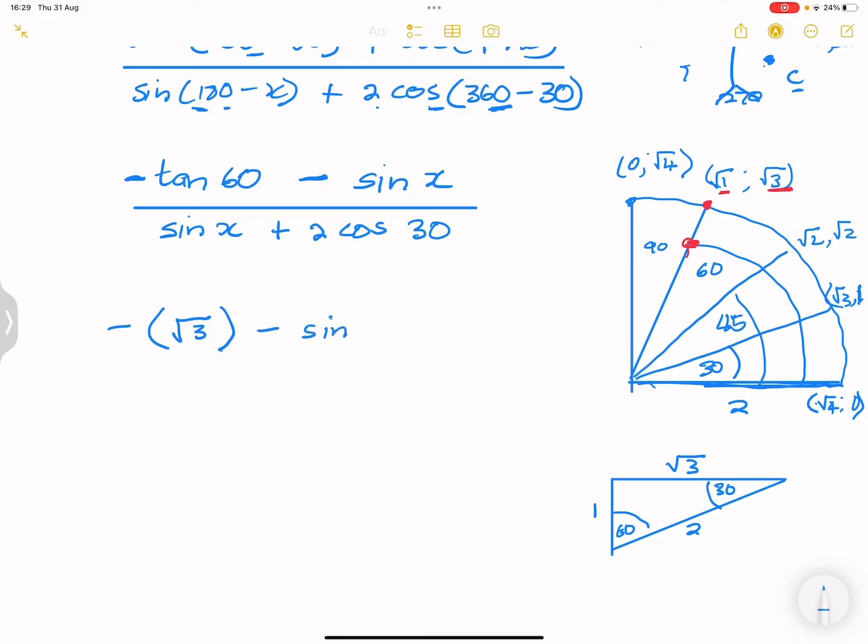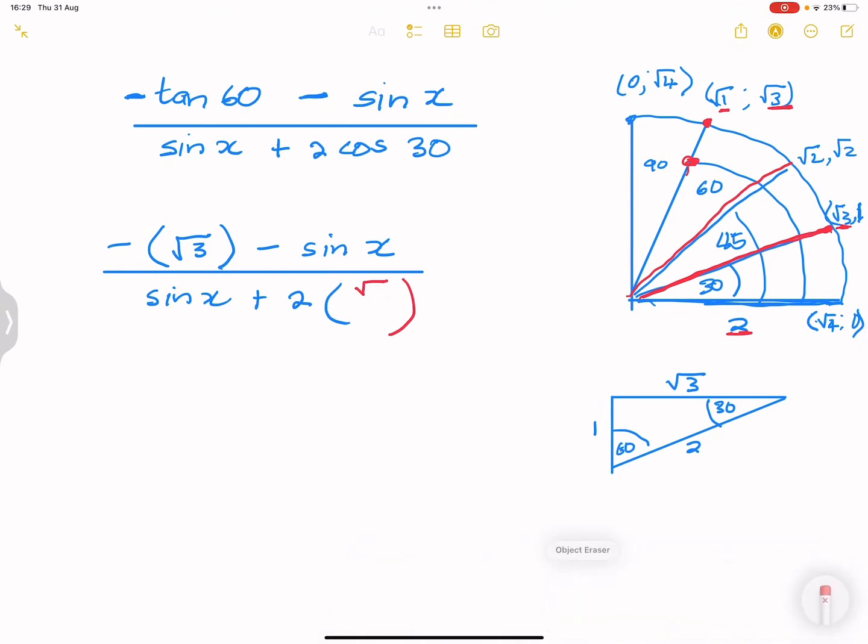Minus sine x divided by we've got sine x at the bottom there, plus 2 times cos 30. Cos is x over r. There's our 30 degree leg there. And cos is x over r, so our x is square root 3 and our r value, remember that r is 2 for all those values. So r is 2, so that's going to be root 3 over 2. So that's going to be square root 3 over 2.